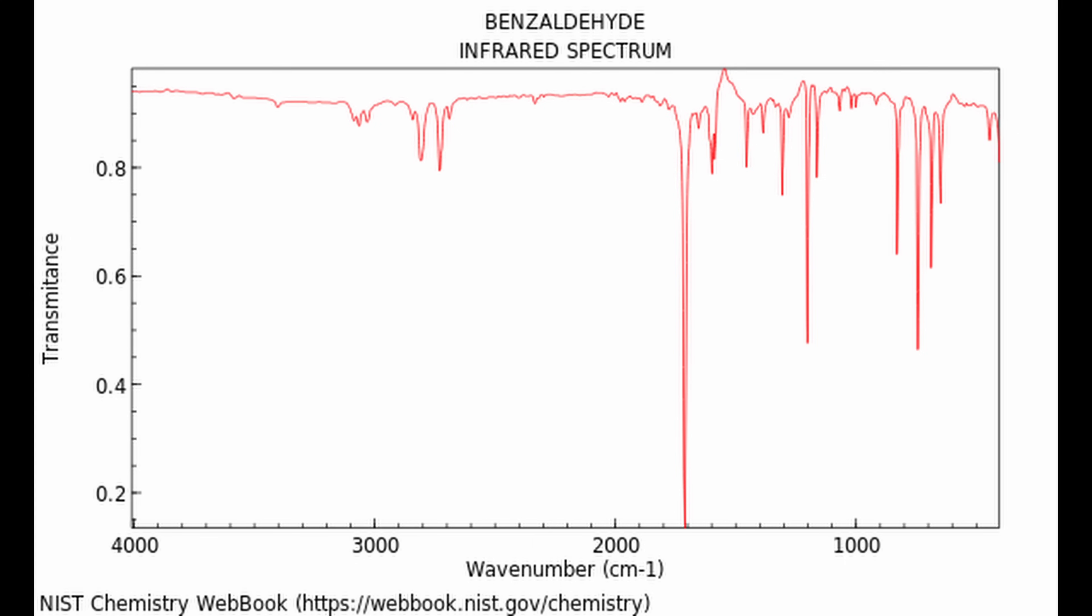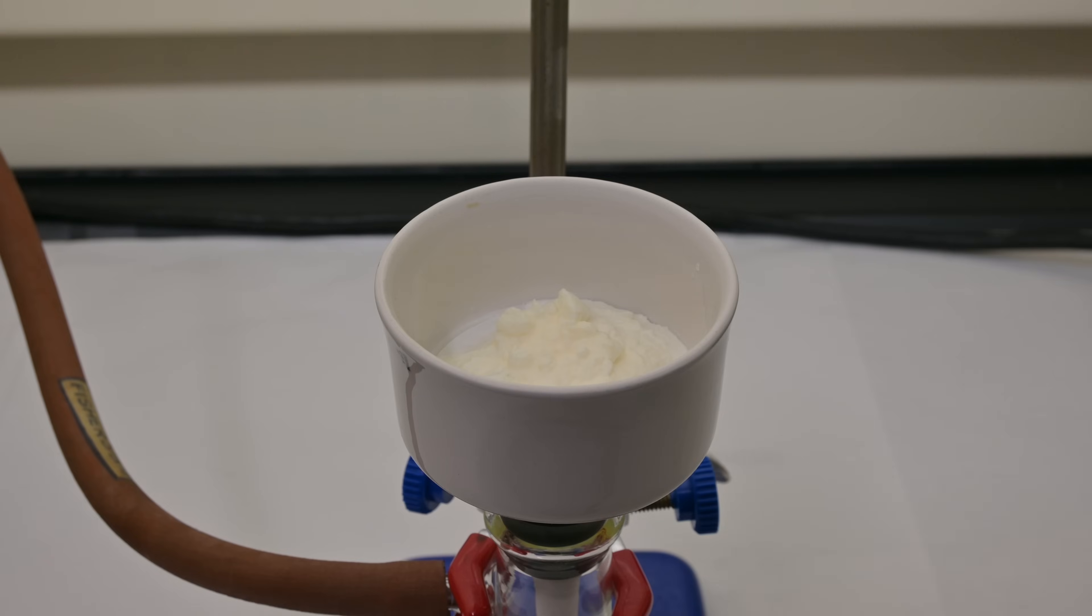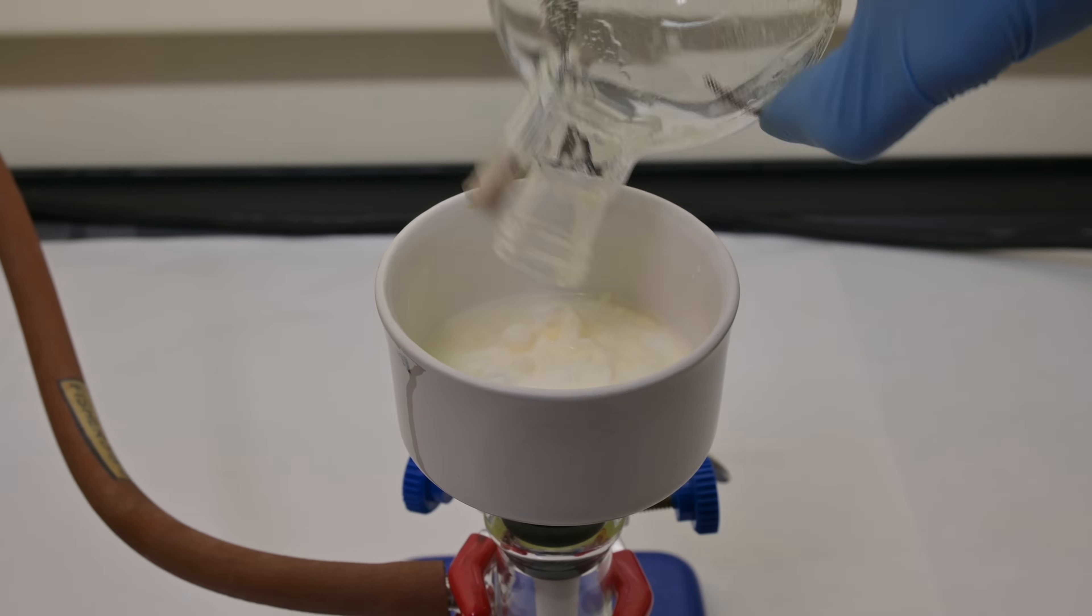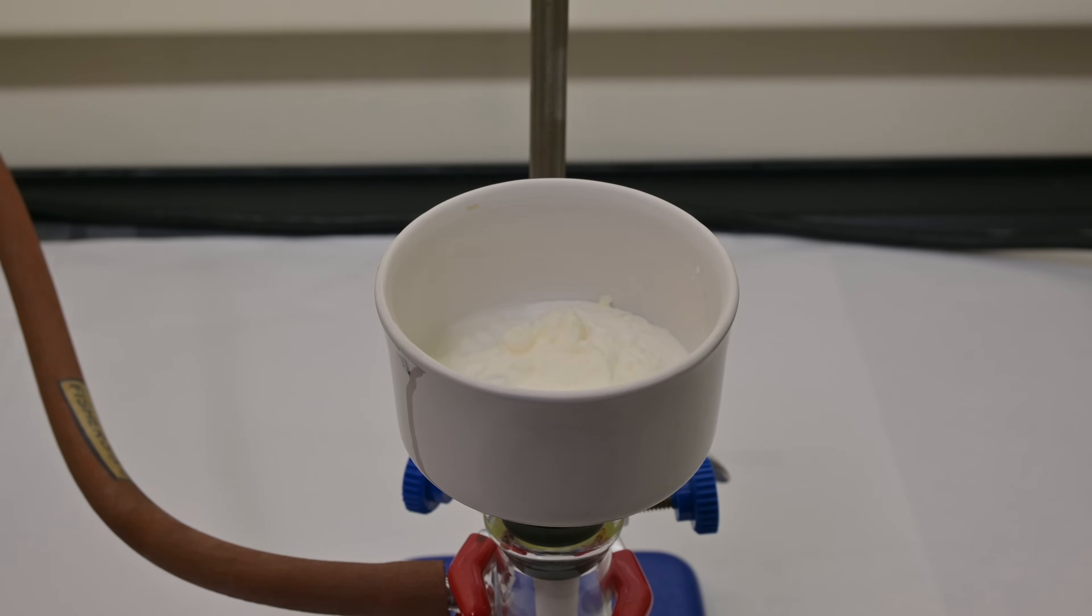This broad OH peak is missing in benzaldehyde itself due to it only having an aldehyde peak. Along with this change of a new OH, there are many distinctive characteristics of a benzoin condensation producing benzoin. So now we not only have physical change of benzaldehyde to a solid, but structural data to back up that change thanks to FTIR.